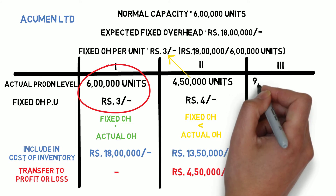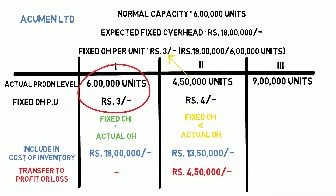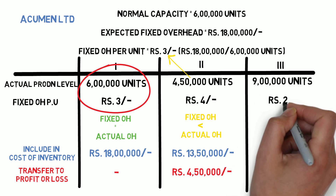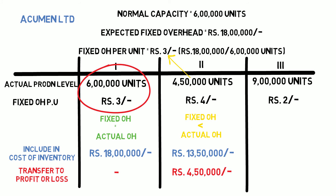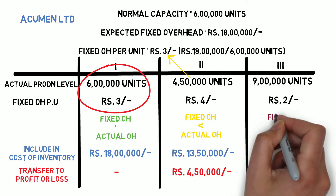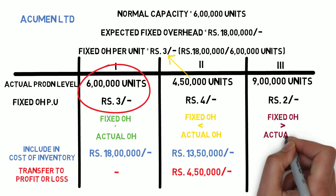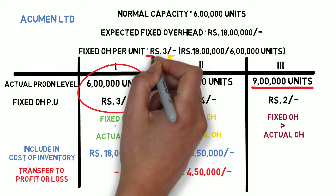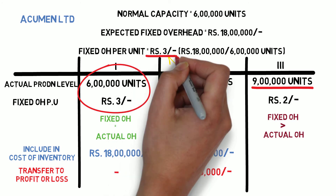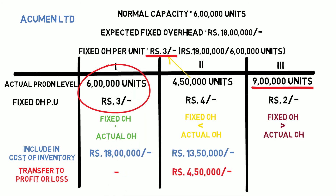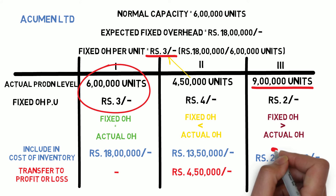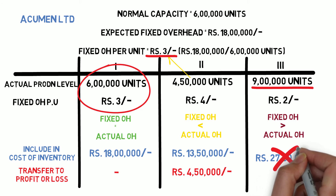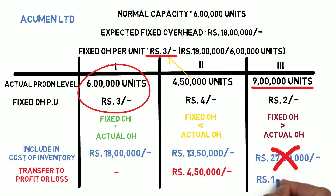In the third case, the actual production output is 9 lakh units, so the fixed overhead per unit would be 2 rupees. Here the fixed production overhead is greater than actual overhead at the standard rate — at 3 rupees per unit it would be 27 lakhs. However, since fixed overhead remains constant at 18 lakh rupees, the fixed overheads on an actual basis — that is 18 lakhs — will be included in the cost.